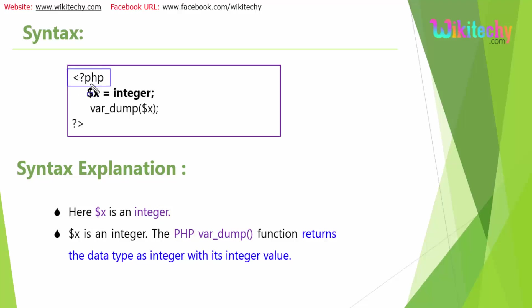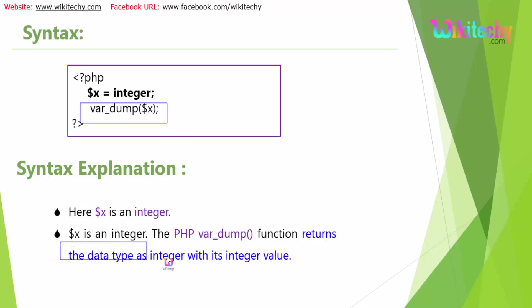In your PHP file, opened with <?php and closed with ?>, you assign $x a value and then call var_dump($x). This function displays the variable's value along with its data type — it returns the data type as integer along with the integer value.